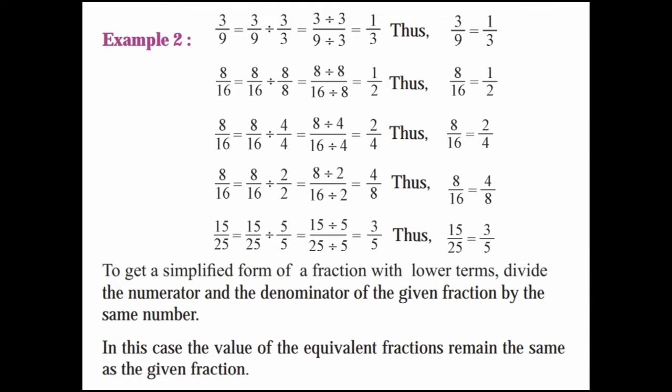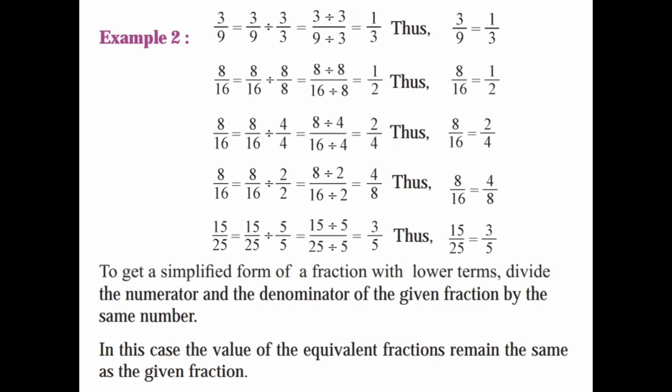To get a simplified form of a fraction with lower terms, divide the numerator and denominator of the given fraction by the same number. In this case, the value of the equivalent fraction remains the same as the given fraction.